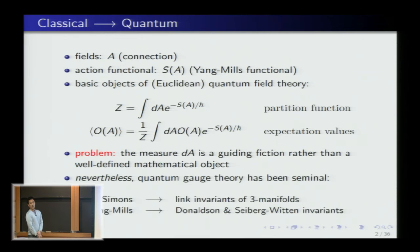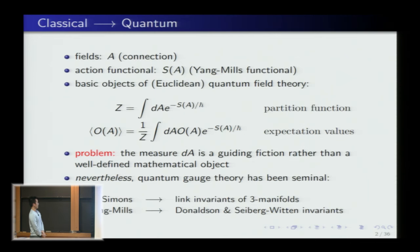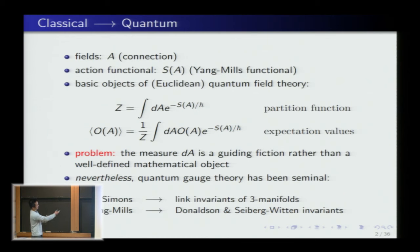Nevertheless, that hasn't stopped people from working with path integrals. In quantum gauge theory there's been lots of seminal work, say, in Chern-Simons theory and supersymmetric Yang-Mills theory — for low-dimensional topologists, the famous work of Witten in deriving three-manifold invariants, and Donaldson and Seiberg-Witten invariants.